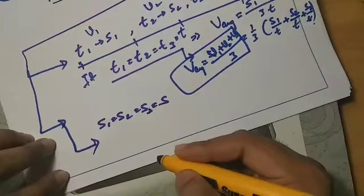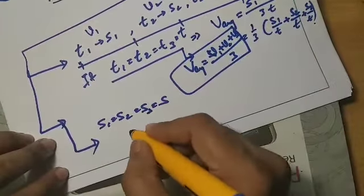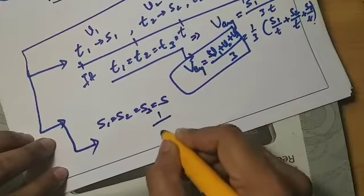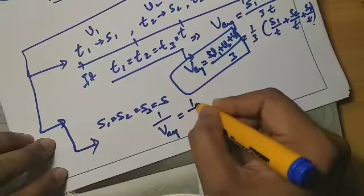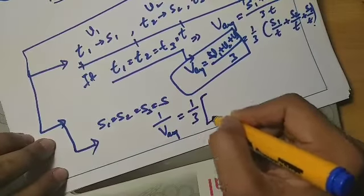And the average speed is equal to 1 by 3 times, 1 by V1 plus 1 by V2 plus 1 by V3.